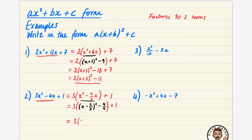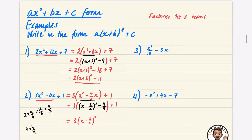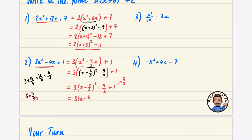Expanding these brackets: I have 3(x − 2/3)². I now need to multiply 3 times −4/9. You could say that's 12/9 and simplify to 4/3, or you can see that 3 and 9 share a factor of 3 and go straight to 4/3. So multiplying the 3 times −4/9 gives −4/3. Plus 1 is the same as 3/3, so −4/3 + 3/3 is −1/3. The answer is 3(x − 2/3)² − 1/3.